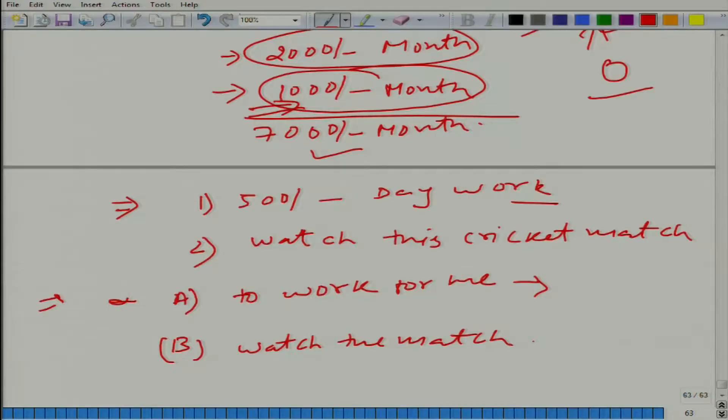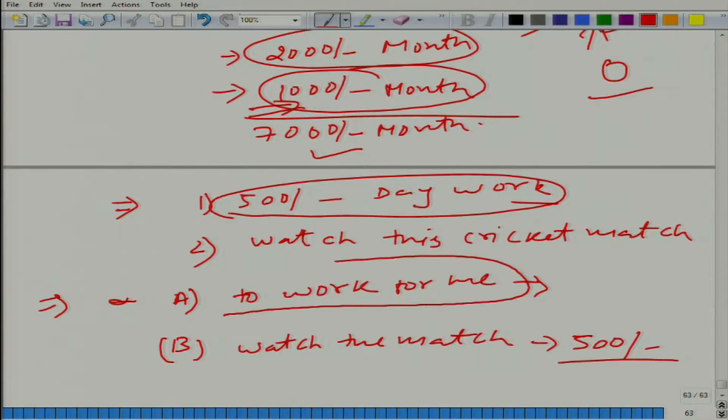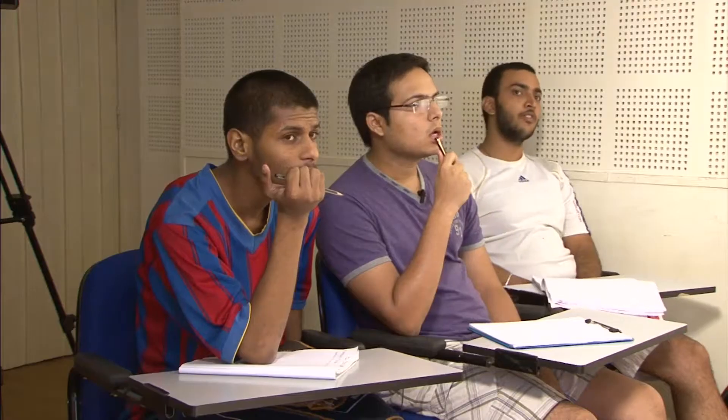500 rupees. So in this case if he watches the match and we are assuming this is the only other option he had, in that case his opportunity cost is 500 rupees. But how about here? Zero.